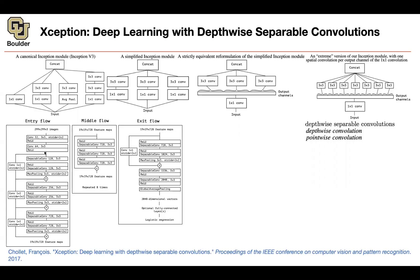They also have different numbers of channels: 32, 64, 128, 256, 728. Once the entry flow is done processing the image, it gives the output to the middle flow. The middle flow does its job, and then the exit flow takes the output of the middle flow and in the end gives us the probabilities for our logistic regression.